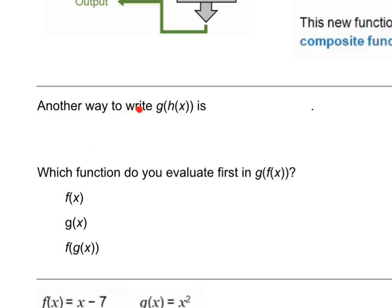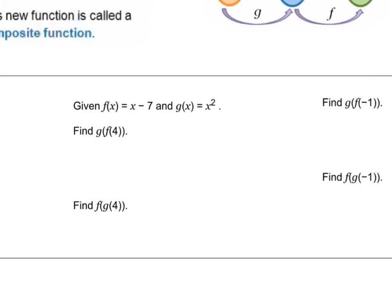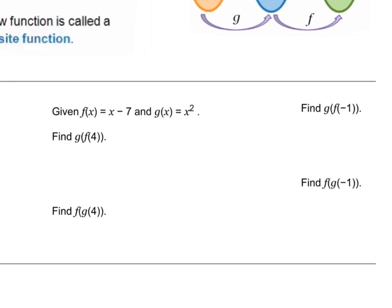Another way to write g of h of x is g∘h of x. In the composite function g of f of x, you'd want to evaluate the inside function first — and that would be your function f. Let's go ahead and take a look at a real example.